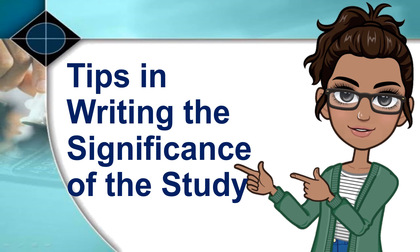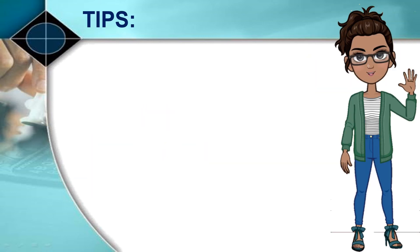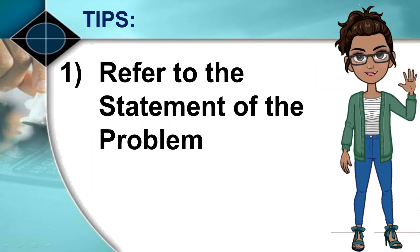Here are the tips in writing the significance of the study. Number one, refer to the statement of the problem. Your problem statement can guide you in identifying the specific contribution of your study. You can do this by observing a one-to-one correspondence between the statement of the problem and the significance of the study.